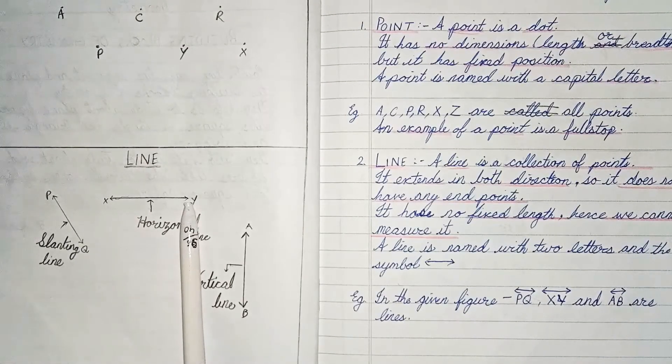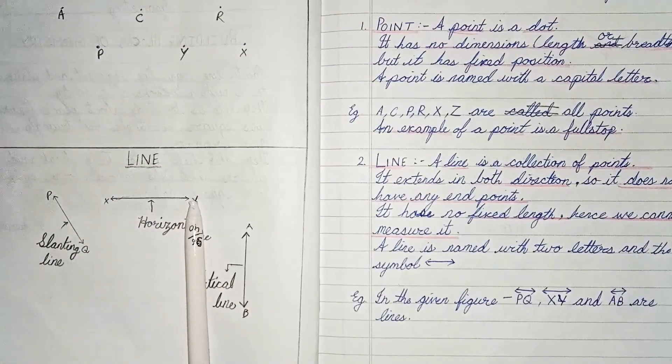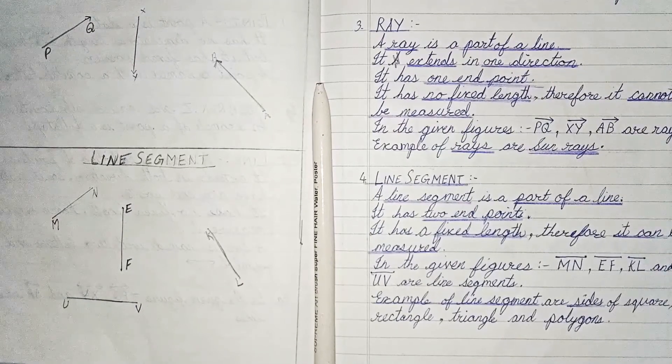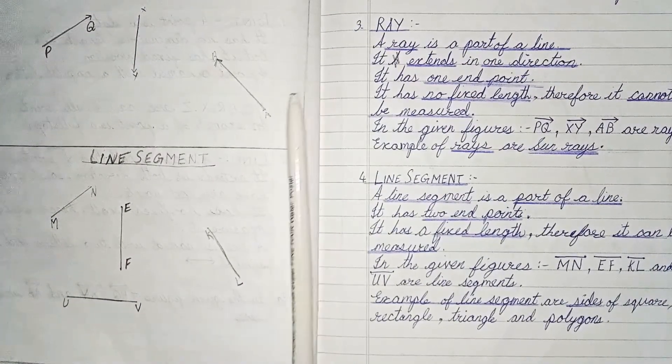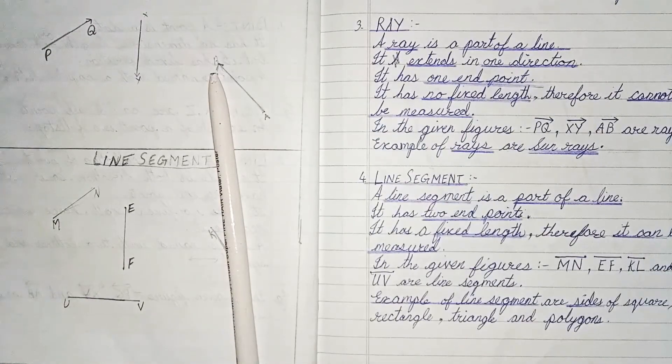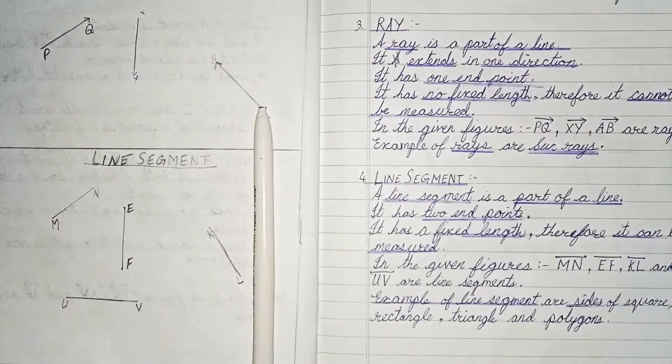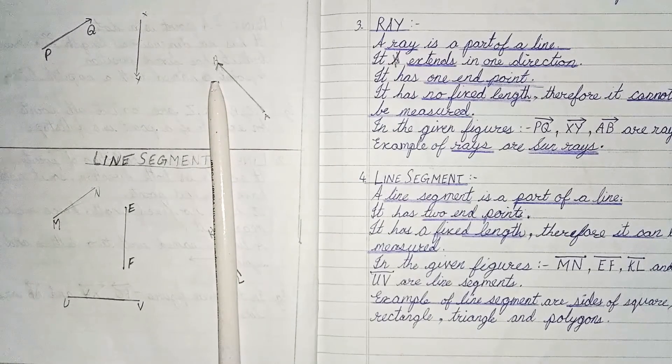So it does not have any endpoints. Next is ray. A ray is a part of a line and it extends in only one direction. It has one endpoint. No length, therefore we cannot measure it.